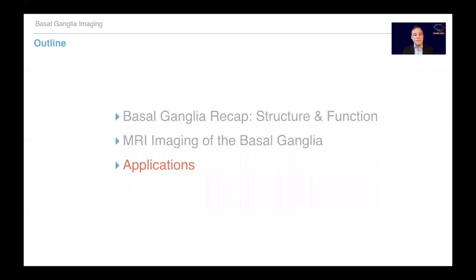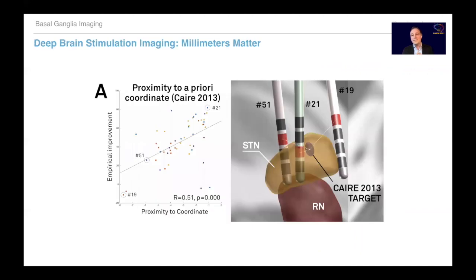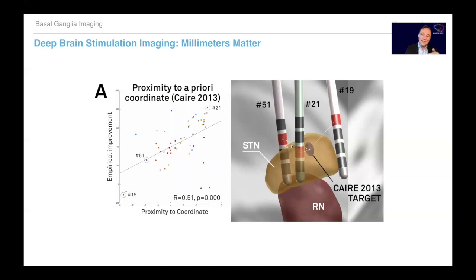Quickly on the application side: I mentioned brain stimulation, and here millimeters really matter — that's why it's the optimal example to highlight why all this precision is necessary. Here you can see two deep brain stimulation electrodes just two millimeters apart from each other. The optimal stimulation site within the small subthalamic nucleus: the electrode closer to it led to 80% improvement in clinical outcomes, while the one further away led to only 25%. Just two millimeters difference. We need the best imaging we have to resolve these differences.